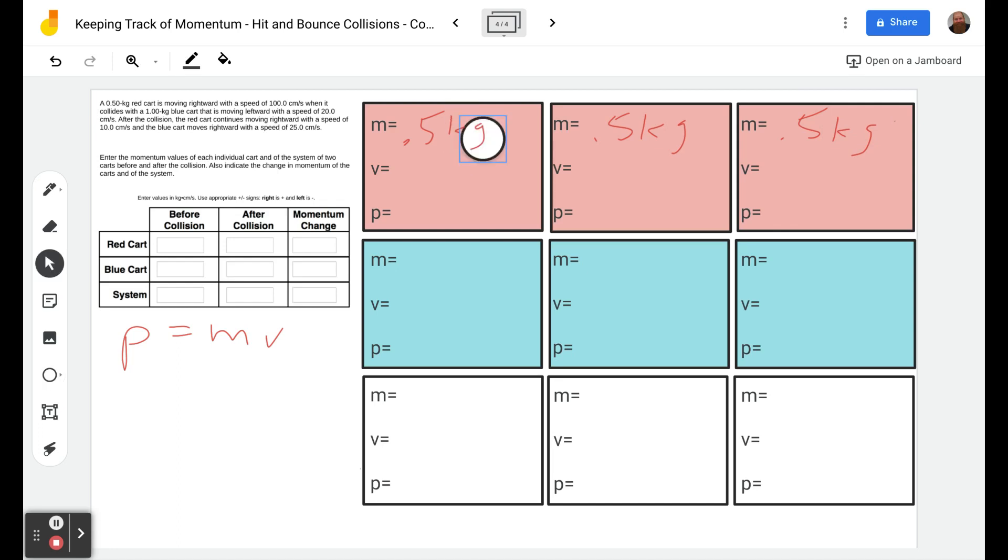I should just be writing numbers here. We're just going to put numbers in. You can tell I haven't used this in a little while. So 0.5 kilograms is our mass of our red cart, and it's moving rightward with a speed of 100, so rightward is positive, moving at 100. That's before collision, so 100 times 0.5 gives us 50 kilogram-centimeters per second. It collides with a 1 kilogram blue cart, so these are all 1.